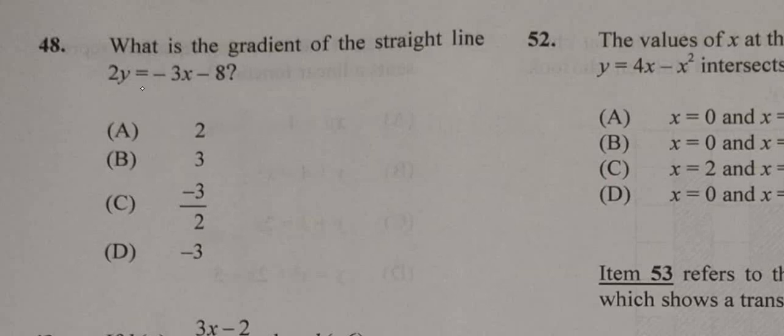So, question 48, what is the gradient of the straight line? Here, you have to make y the subject, so we need to remove the 2 from y. 2 is multiplying y, so I'm going to divide by 2 all the way through. And so this is going to be equal to y equals negative 3 over 2x minus 4.